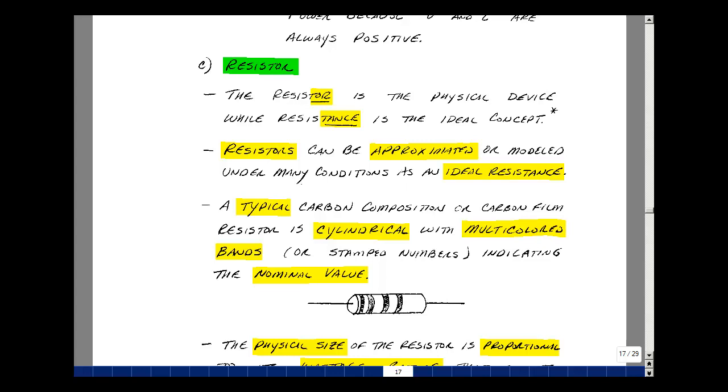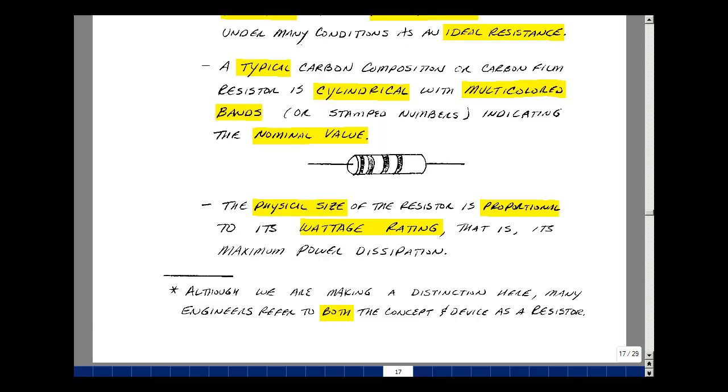The physical size of the resistor is proportional to its wattage ratings. So the bigger the resistor, the higher the wattage rating. So we have to calculate the power dissipated in the device to make sure that we stay below its rating.